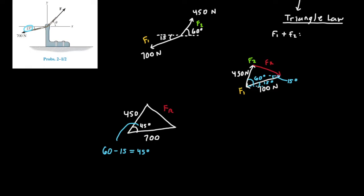And here we can say that 700 is length 1 and 450 is length 2. So hence, we know two sides or lengths of this triangle plus one angle. And therefore, we can simply apply the cosine law to find FR.